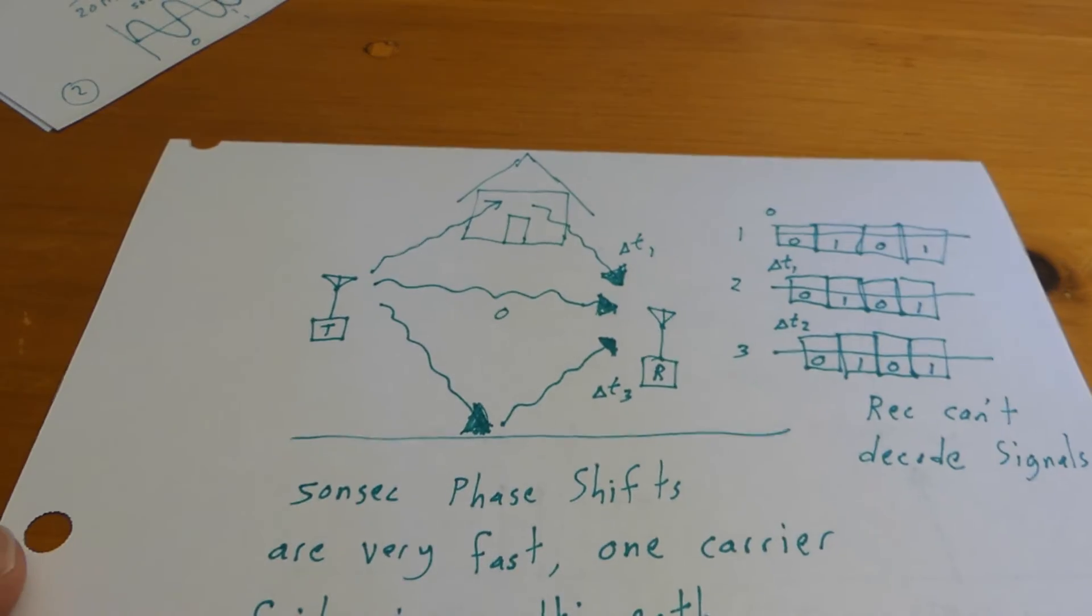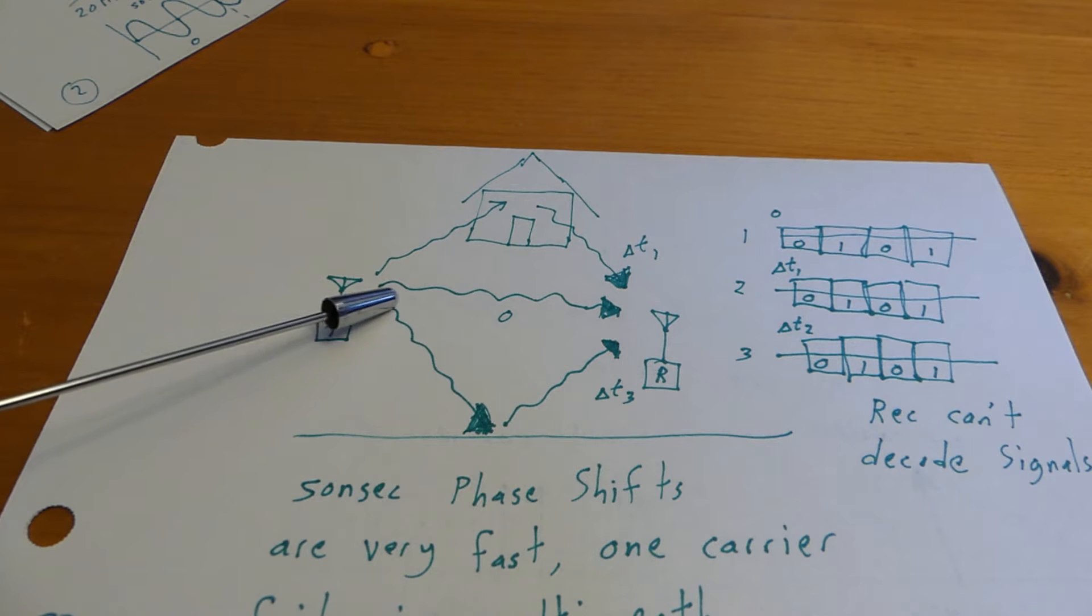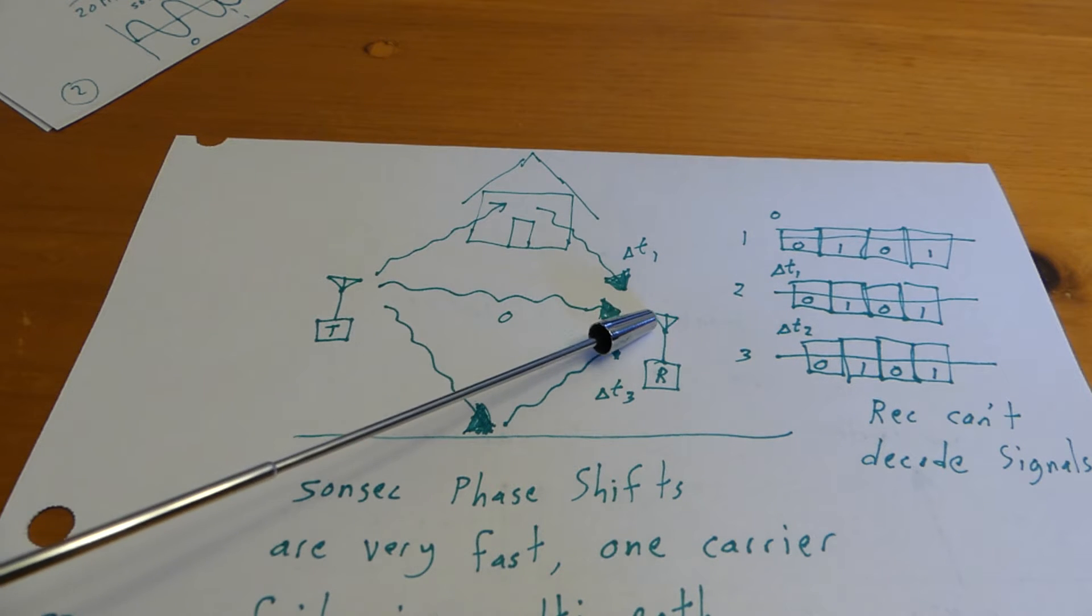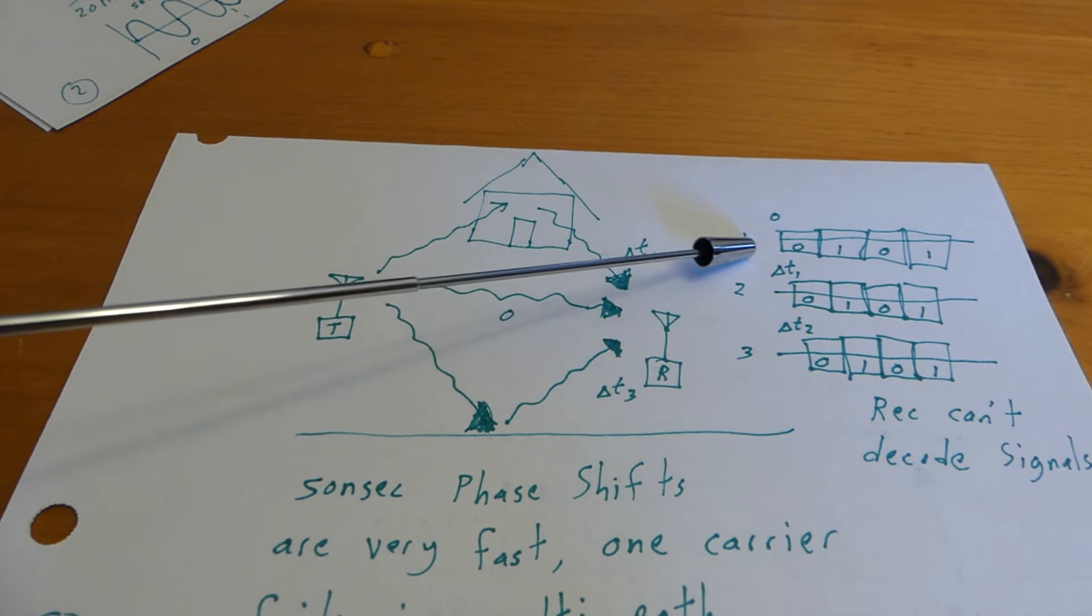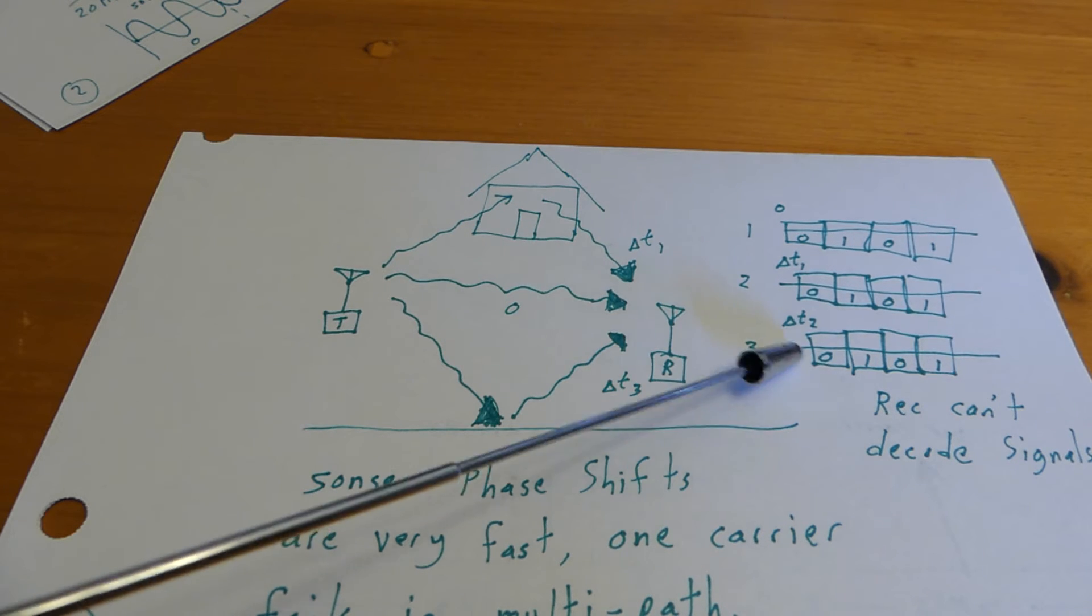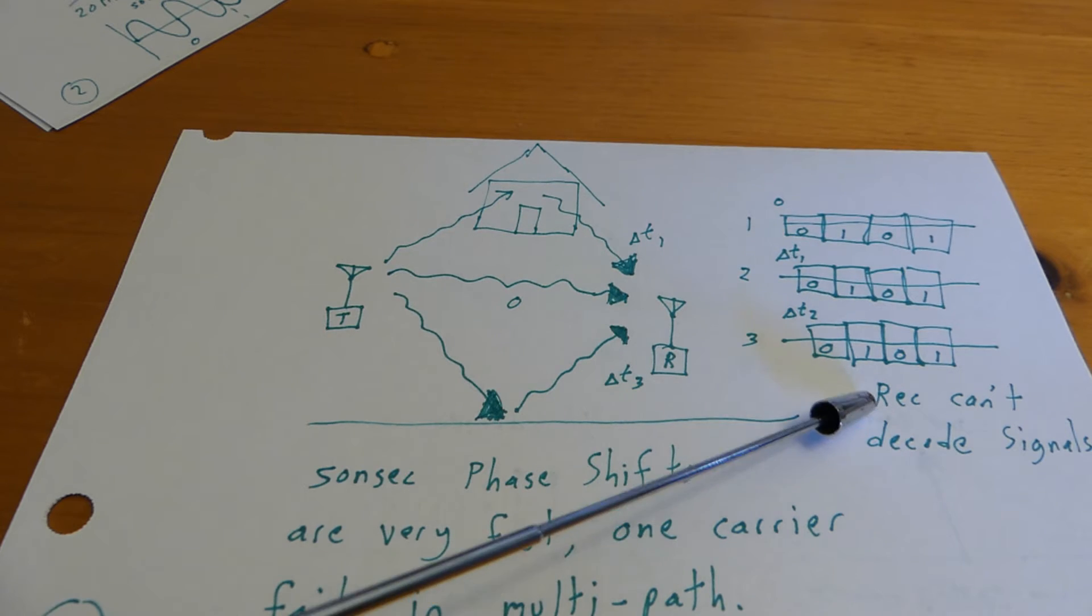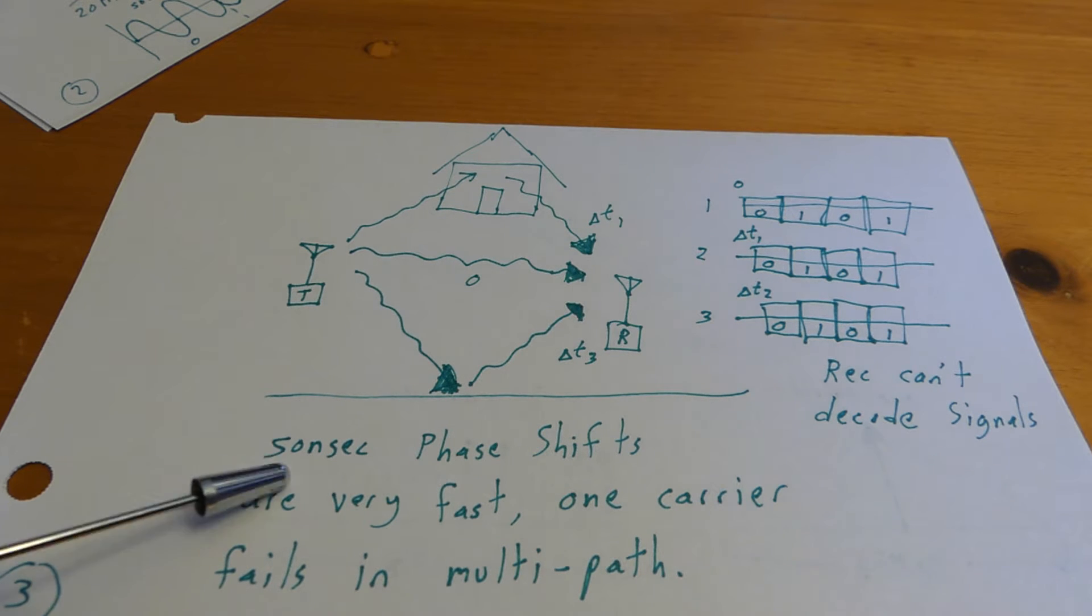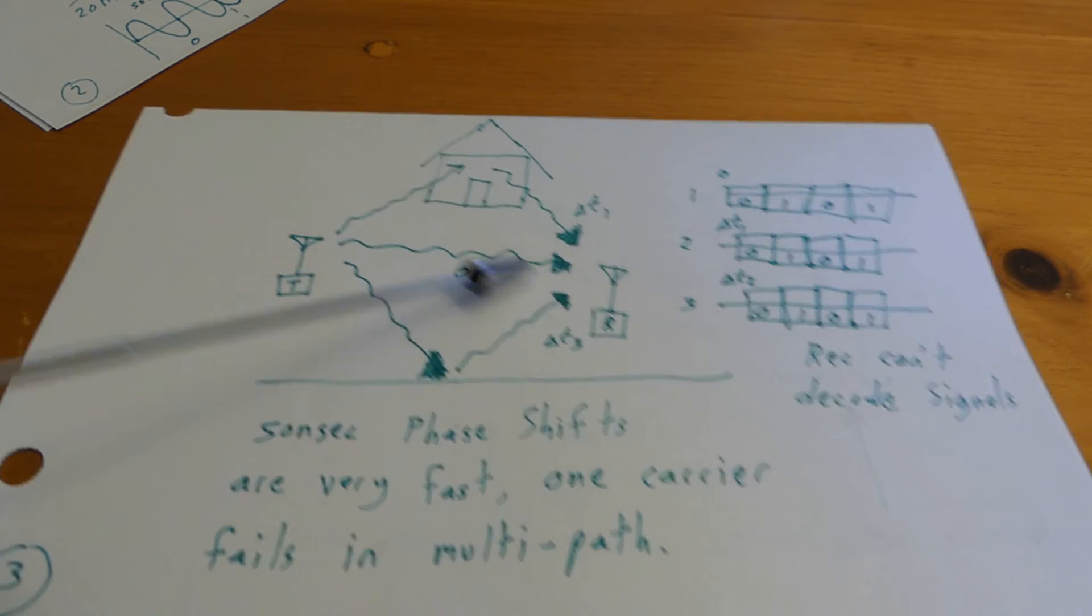Alright folks, so here is our transmitter here, right? Here's our receiver. And the reality is it's going to get a direct wave, but it's also going to get multipath. It might bounce off the house here and then come into the radio. It might bounce off the lawn and then come into the radio. So the radio is going to have these three time shifted signals coming into this receiver. And they're all going to be shifted in time. Well, with that very small 50 nanosecond shifting, they're all going to be overlapping on each other. And that receiver is not going to be able to decode what was originally transmitted.